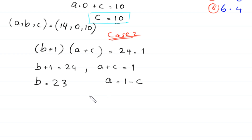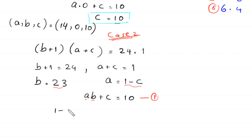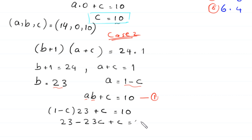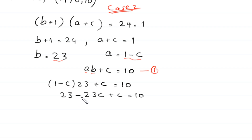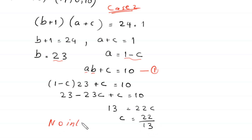We recall equation 1: ab + c = 10. Replacing a with (1 − c) and b with 23, this becomes (1 − c)(23) + c = 10, which gives 23 − 23c + c = 10, so −22c = −13, meaning c = 13/22. So we get no integer solutions from case 2.